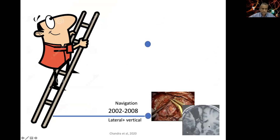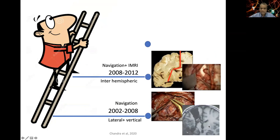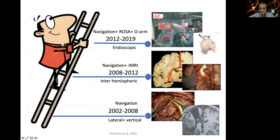Our growth ladder: from 2002 onwards we started doing open hemispherotomies using both lateral and vertical approaches depending on individual pathology. In 2008 I shifted to the interhemispheric approach, especially after acquiring an intraoperative MRI brain suite, finding it requires less retraction. Finally in 2012 we started the endoscopic technique after procuring the ROSA robot and O-arm, attaching the endoscope to ROSA.